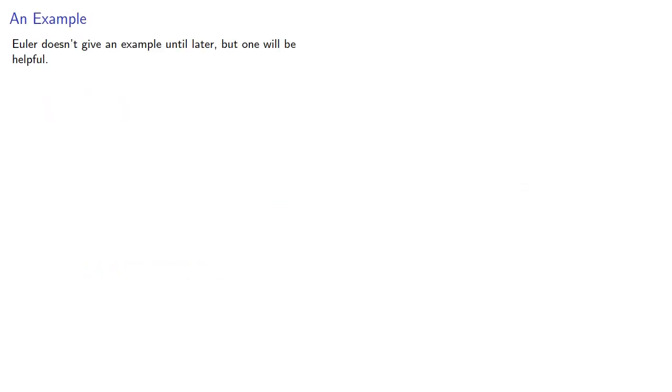Euler doesn't give an example until later, but one will be helpful at this point. Consider the equation sine x equal to one-half. So, again, from our Maclaurin series expansion, we can write the equation.